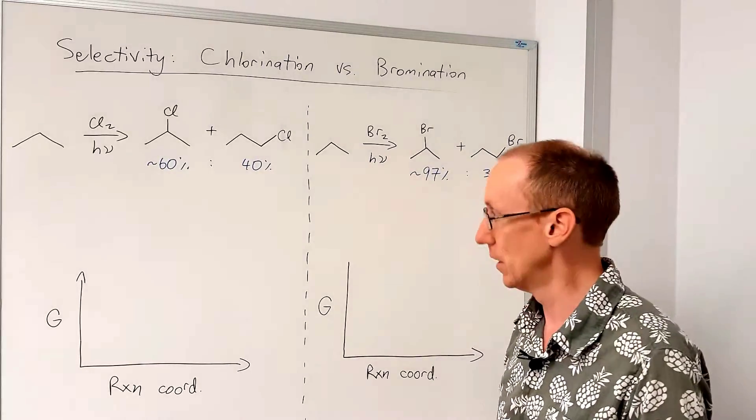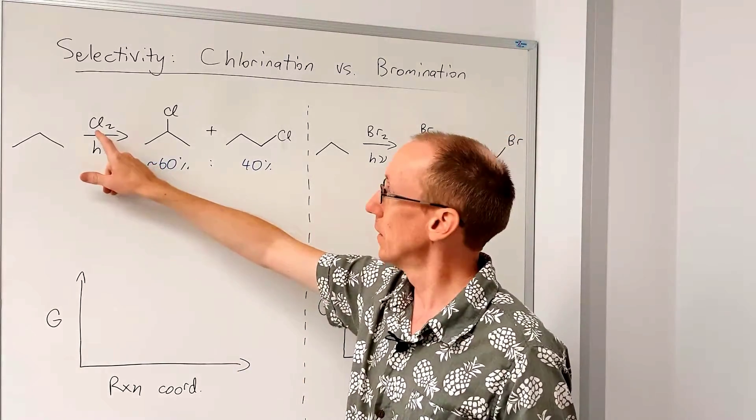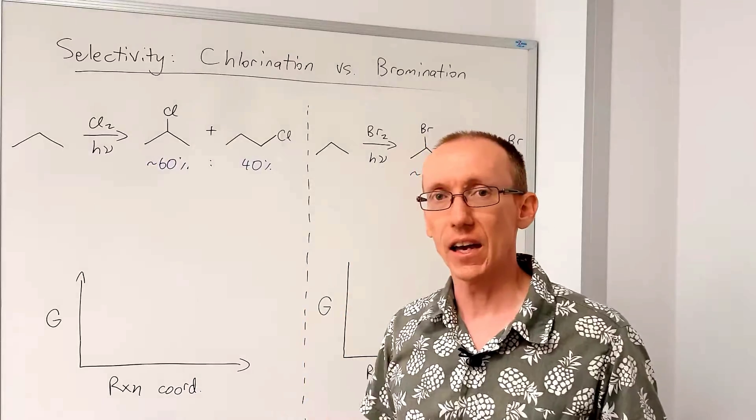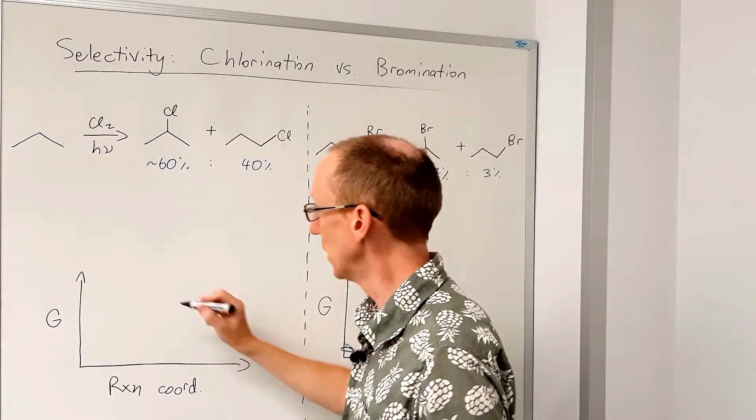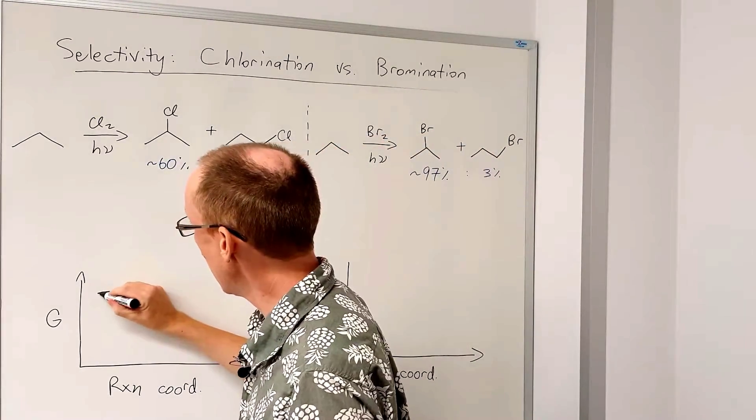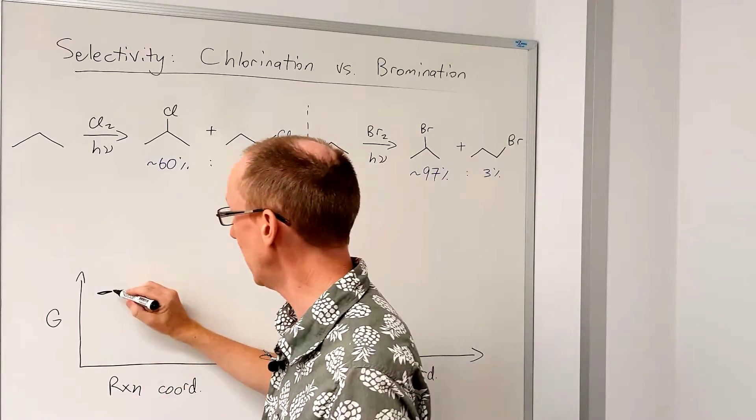So why is that the case? Well when you chlorinate, you generate a very high energy chlorine radical species. So we start off at a very high point on our energy diagram.